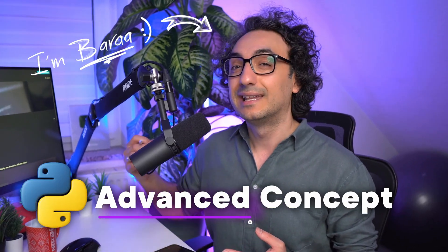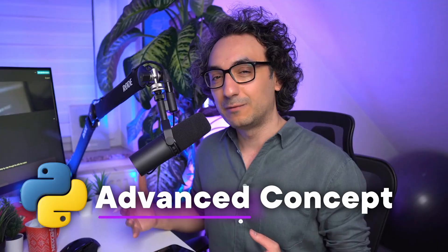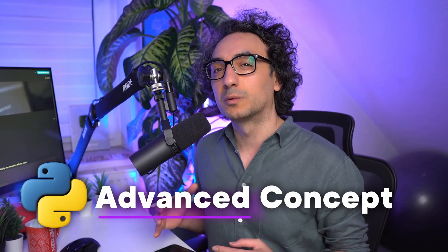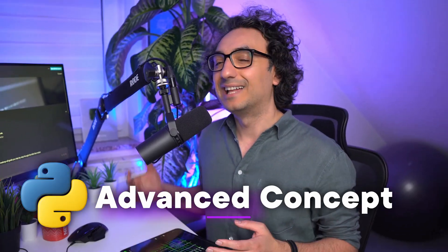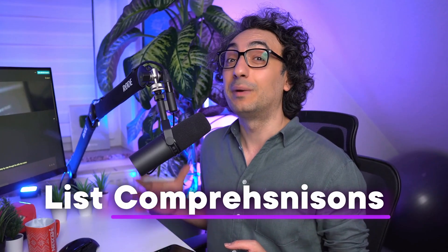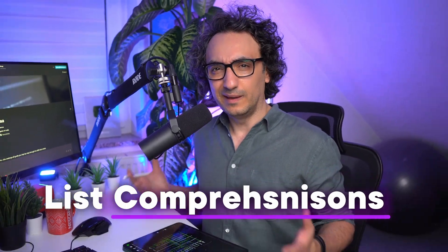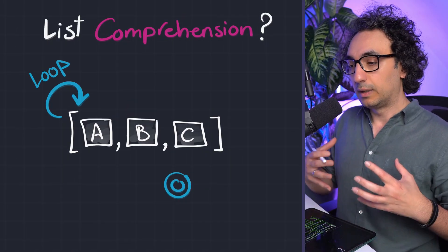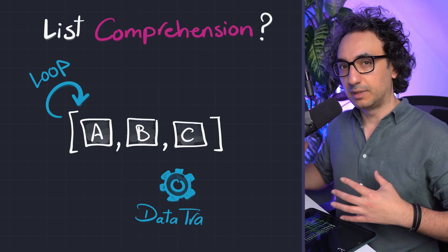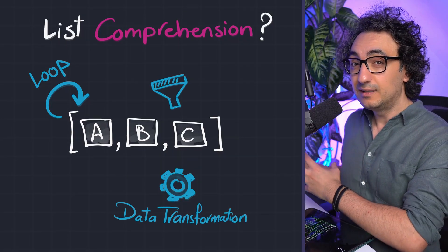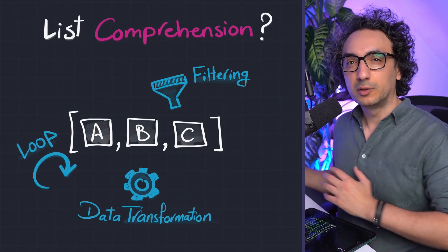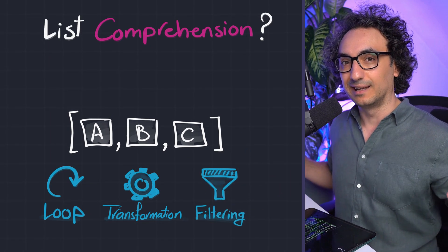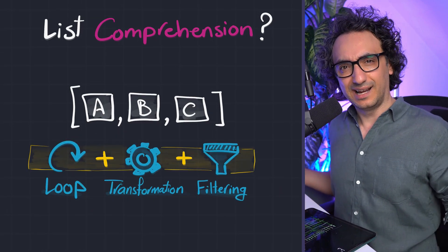We have reached the final advanced technique — the last advanced tool in the toolbox for working with data structures in Python. This is the coolest feature in Python: list comprehensions. We have learned that we can iterate through data, do transformations and manipulations, and filter our data. Now, how about putting them all together in one simple line?